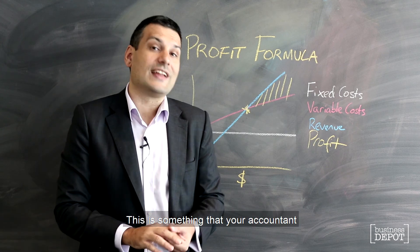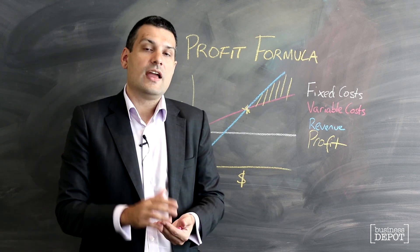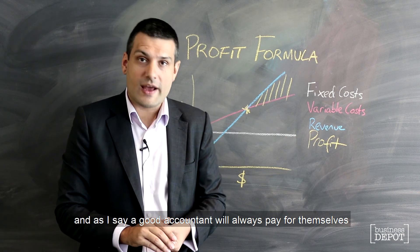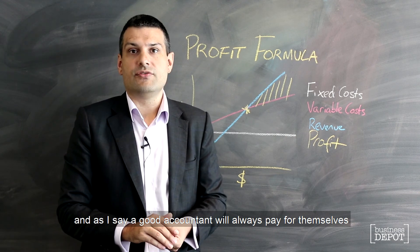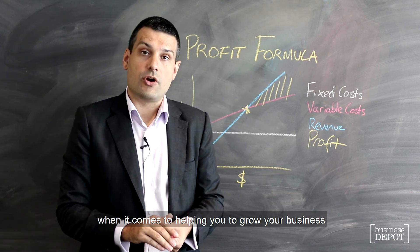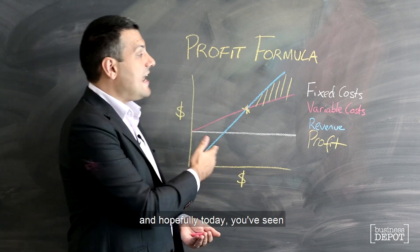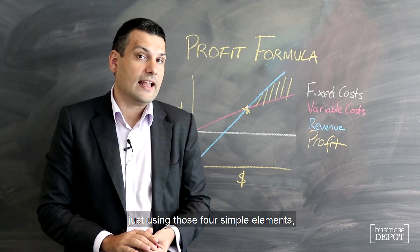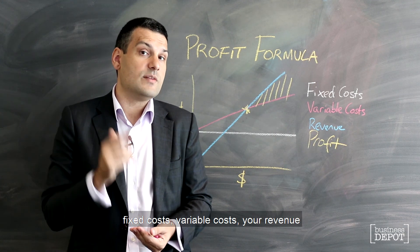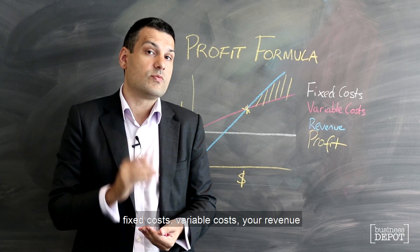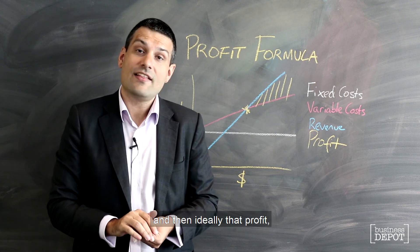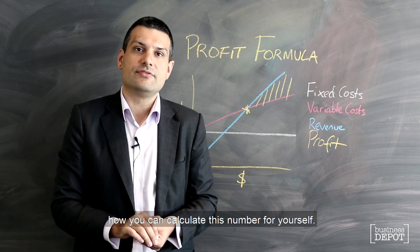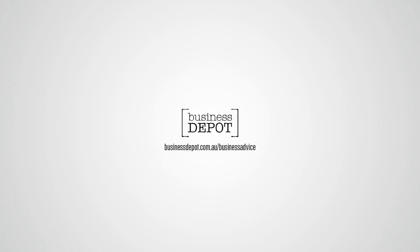This is something that your accountant is definitely able to help you out with, and a good accountant will always pay for themselves when it comes to helping you grow your business. Hopefully today you've seen, just using those four simple elements — fixed costs, variable costs, your revenue, and then ideally that profit — how you can calculate this number for yourself.